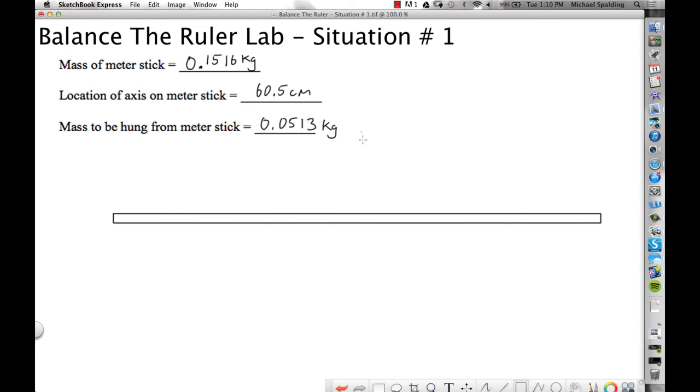Balance the Ruler Lab, Situation 1. You start these problems by doing a free body diagram for the object that could be in a state of rotation.